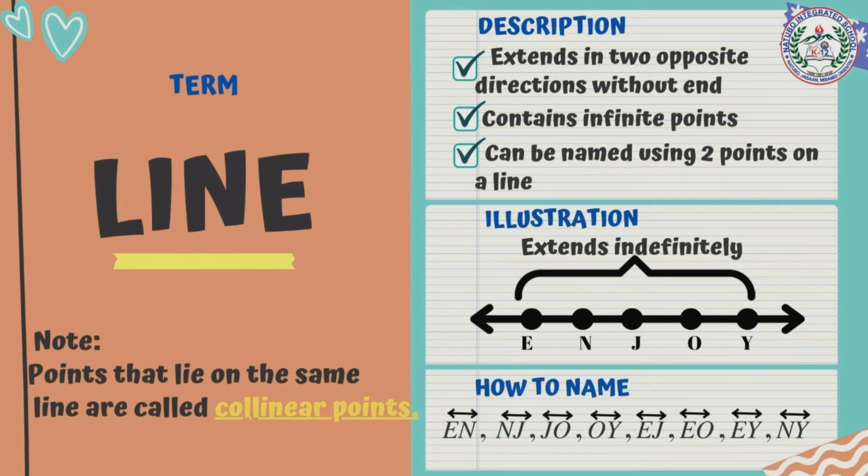Line extends in two opposite directions without end. It contains infinite points. When we say infinite points, it has no limit or no ending number of points. It can be named using two points on a line. As you can see in the illustration, we have our line with points E, N, J, O, and Y. So it extends indefinitely. It means it has no boundary. So how to name a line?